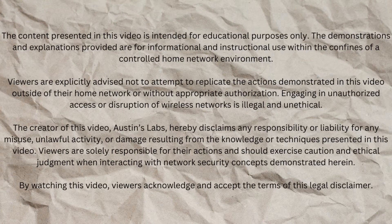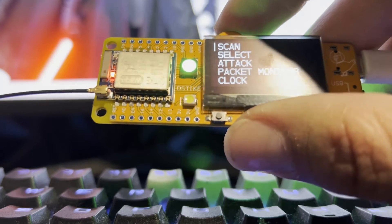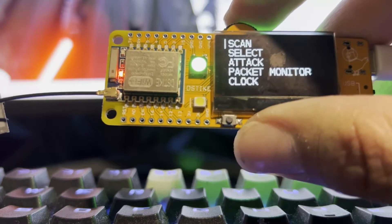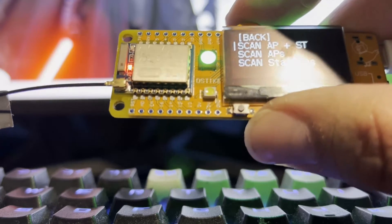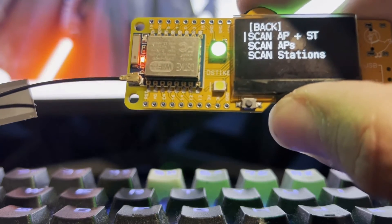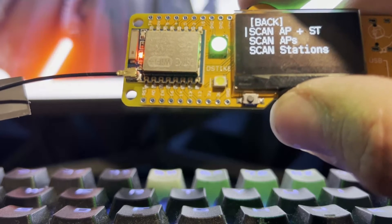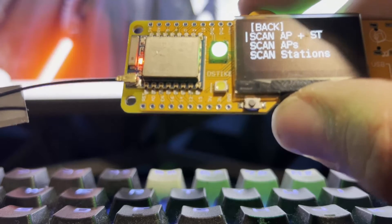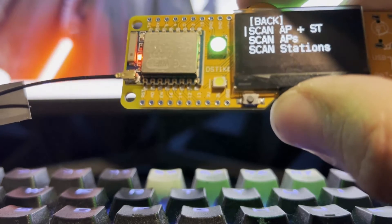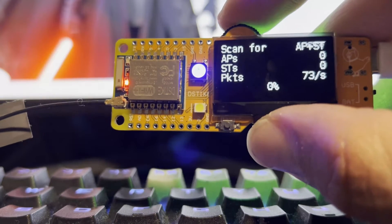Hey, how's it going? Today in this video we're going to be doing a demo of the DeStrike Deauther V3. This device allows you to do basically two different things. First, we can scan APs and STAs — that means access points and stations. Access points are the routers; stations are things trying to connect to them, like phones and computers. So let's scan both access points and stations.